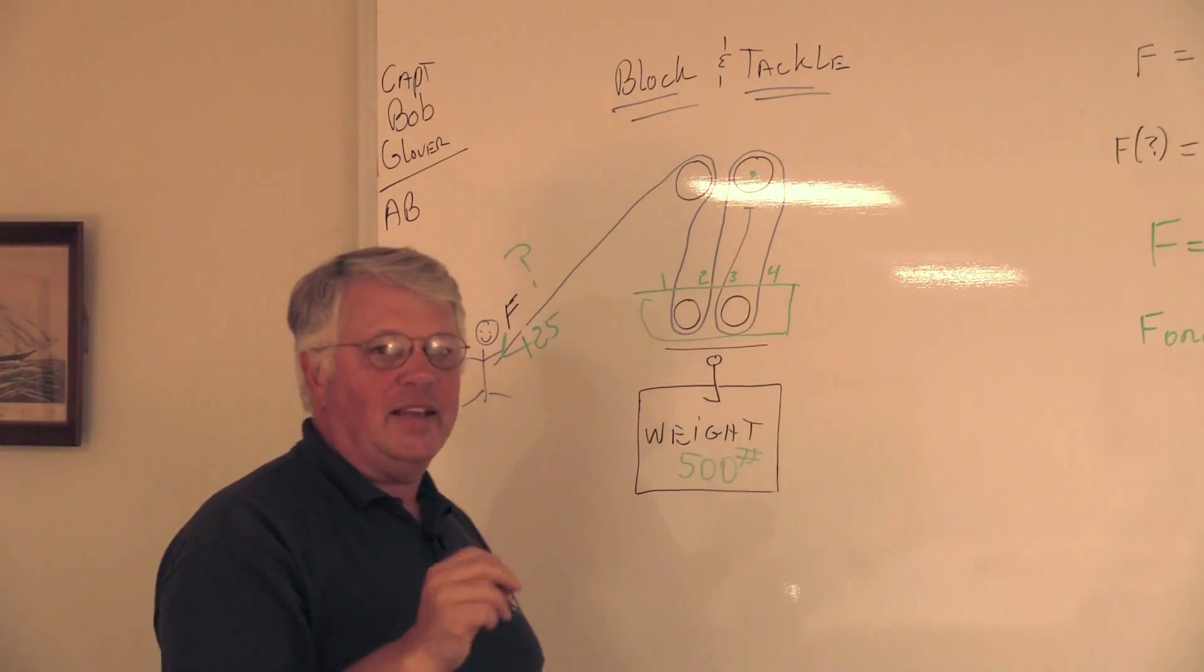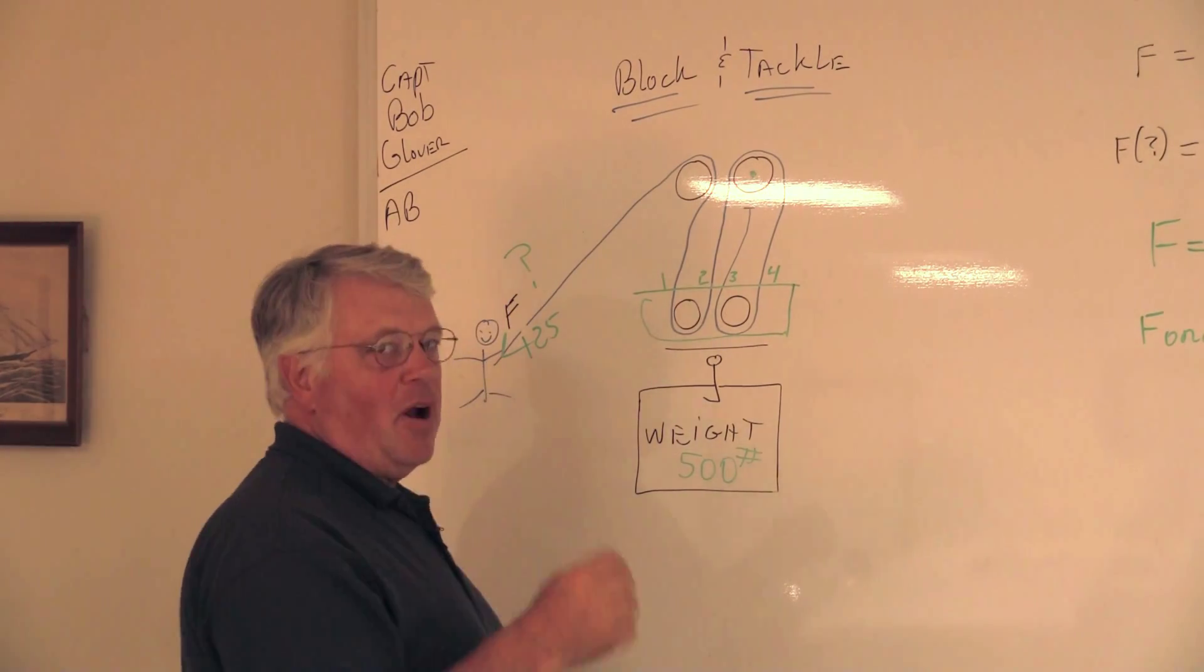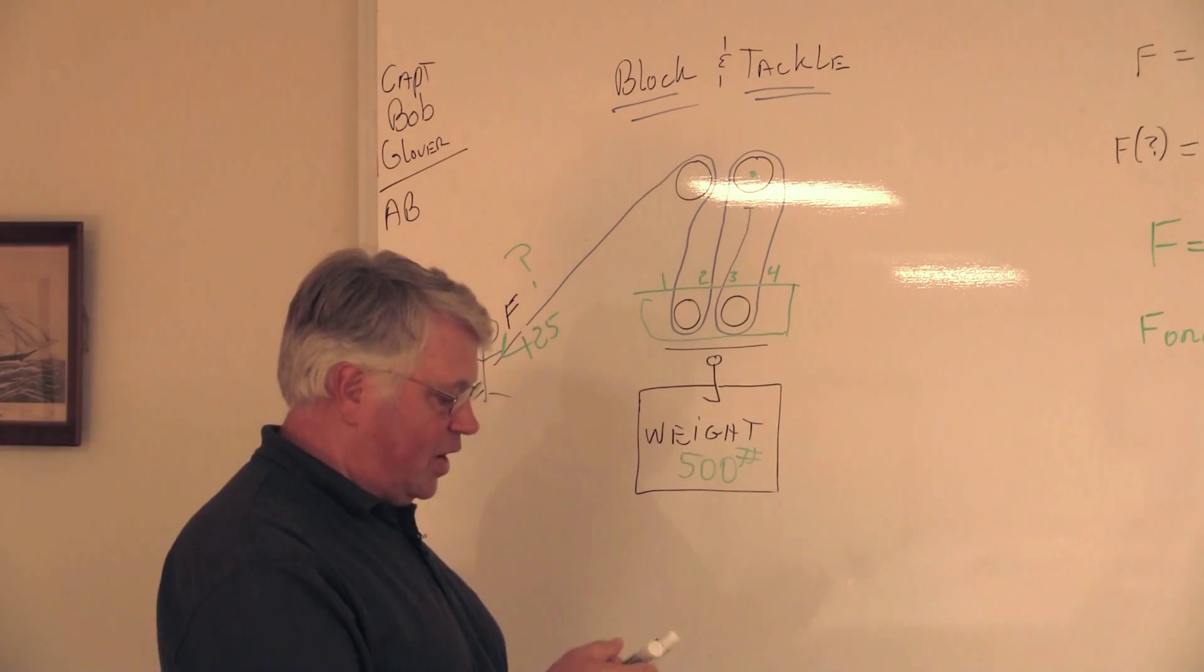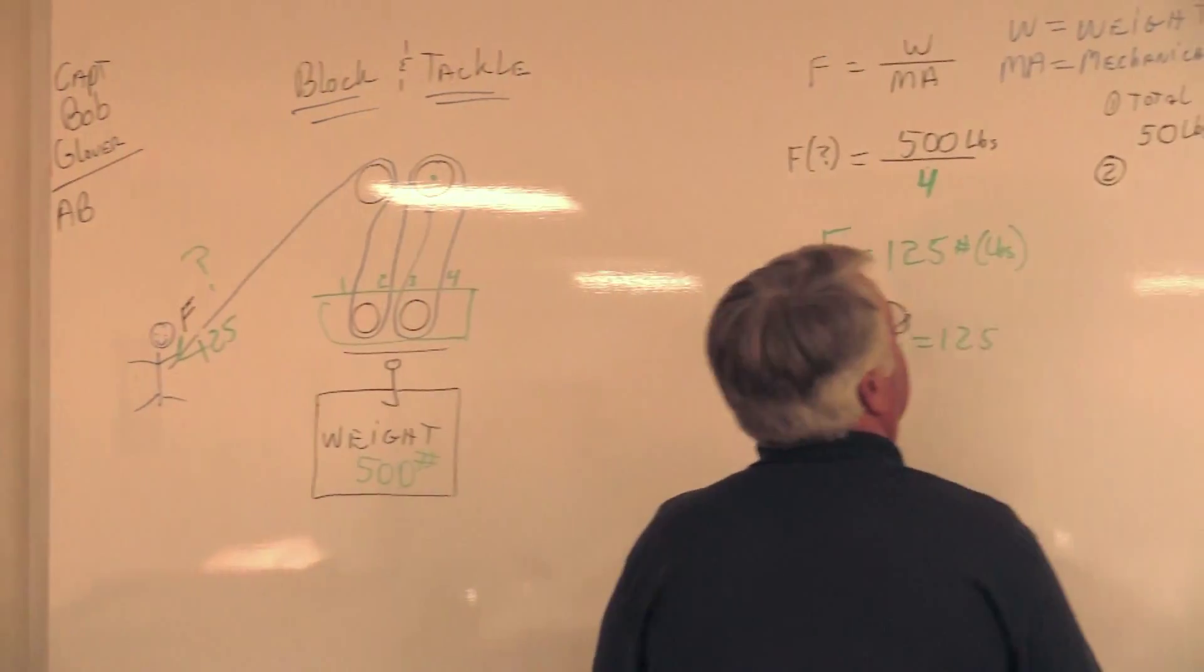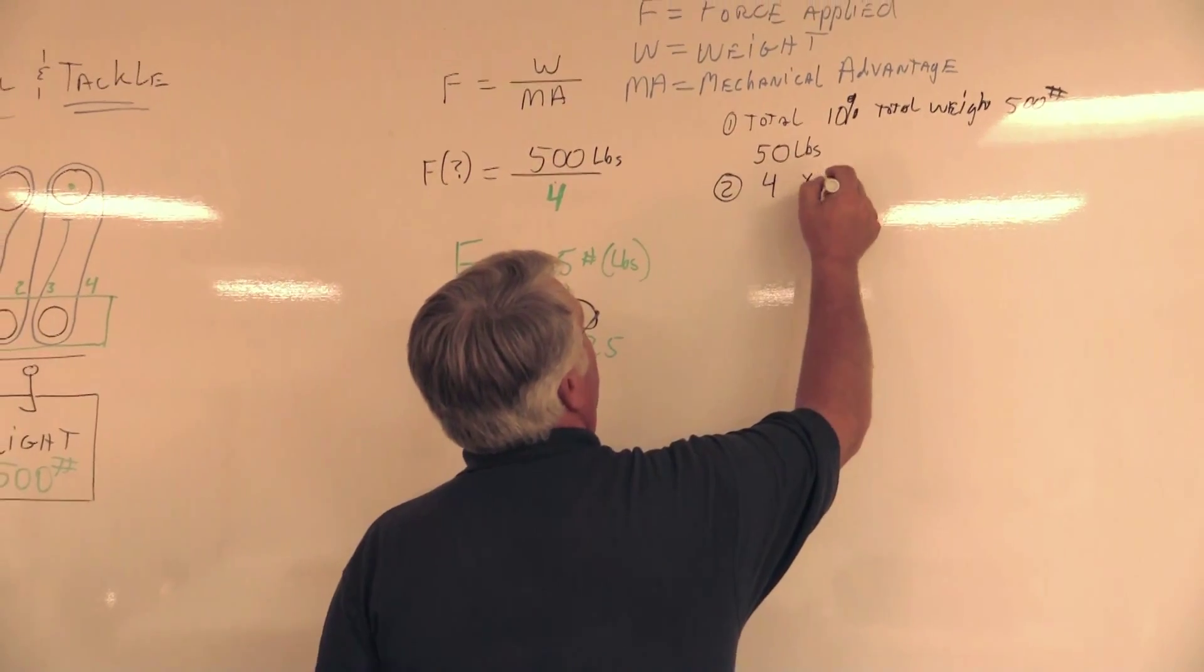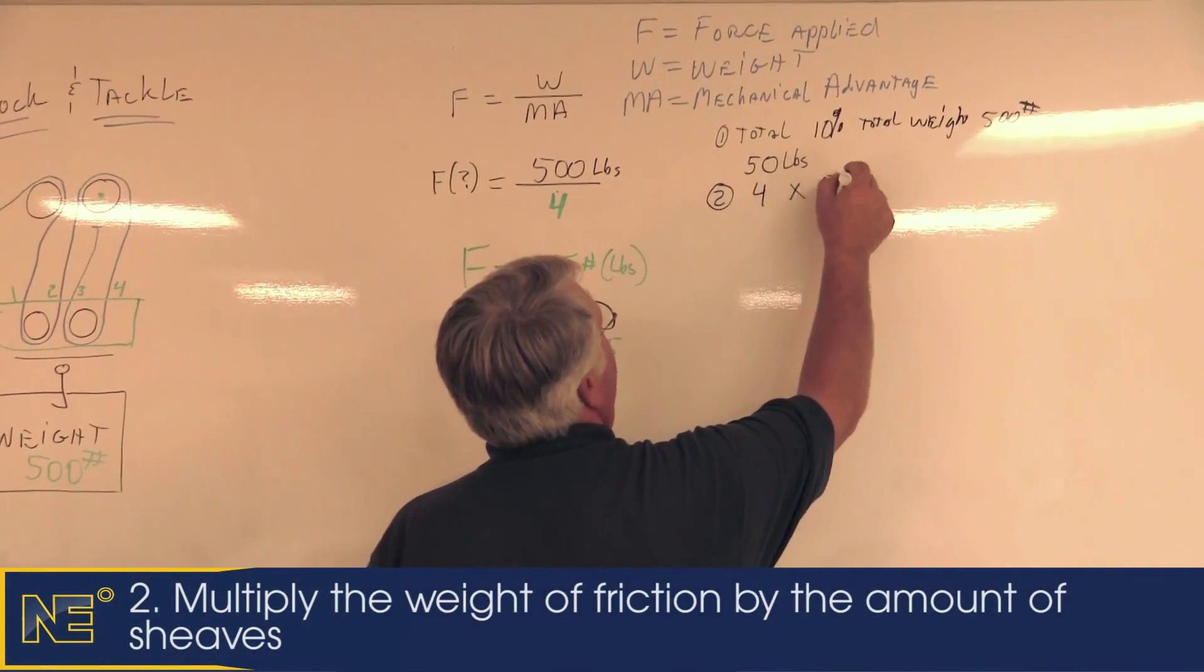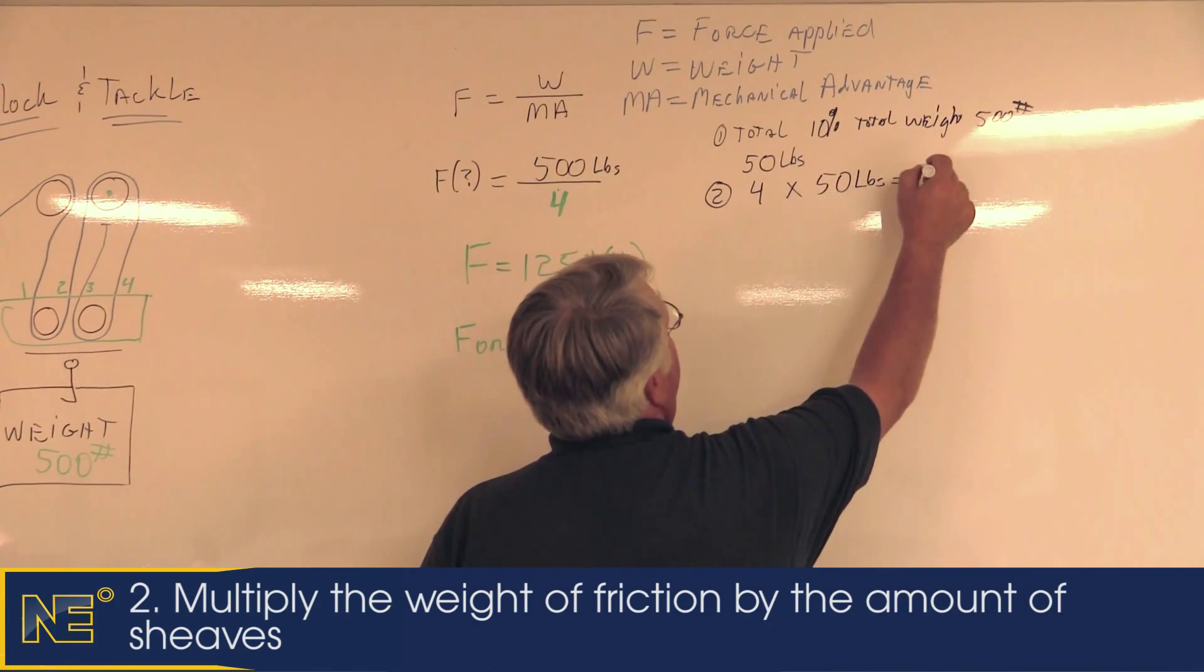So there are four cases of 50 pounds that are causing a problem for me. So I have to compensate for that. So what do I do? So I go over here to my formula, and I have to compensate for that. So I'm just simply going to take four shivs and multiply it by the 10% of the 500, which is 50, which is going to equal what?